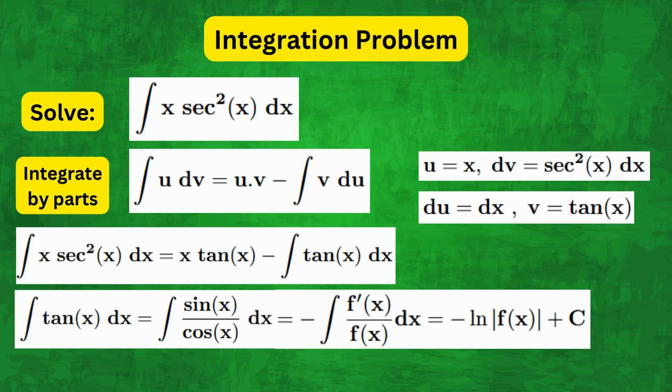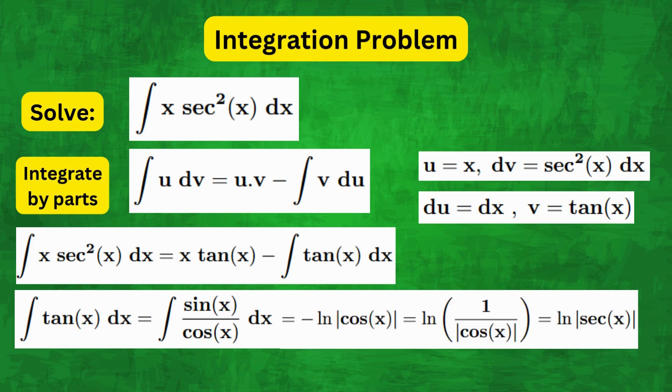So we get ∫tan(x) dx = -ln|cos(x)|. And that is of course equal to ln|sec(x)|.